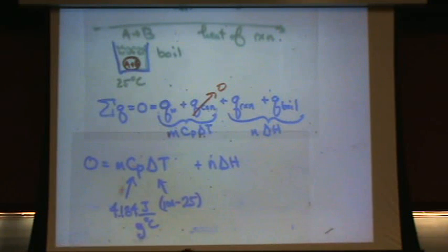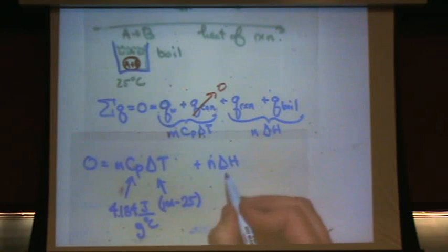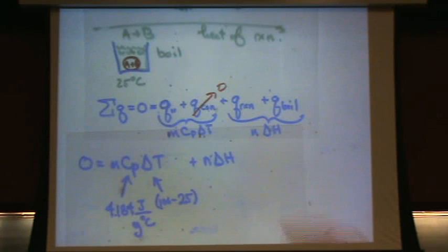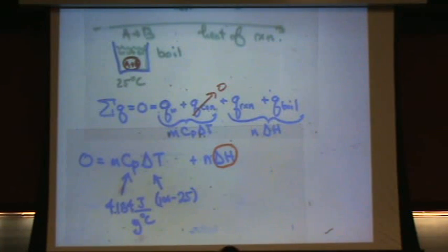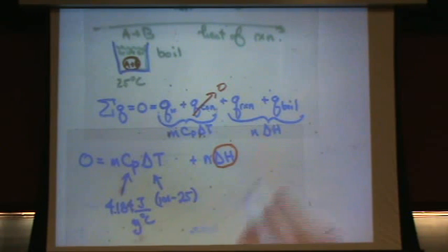Then we have plus Q reaction, which is an N delta H term. So really you're looking for, in this question, you're looking for this right there - looking for that delta H term. How do you get N once you have mass? Just change to moles knowing the molar mass of water.